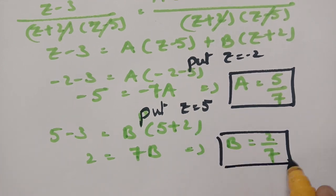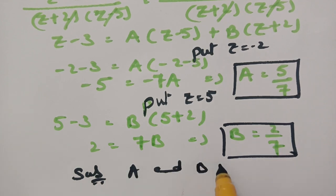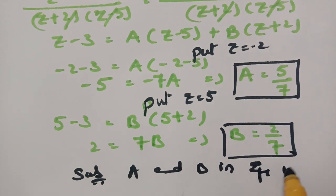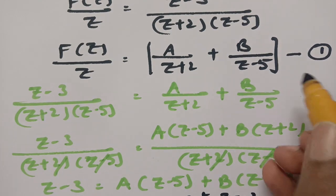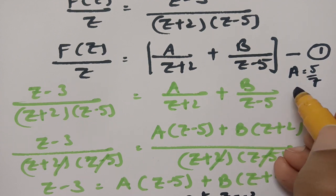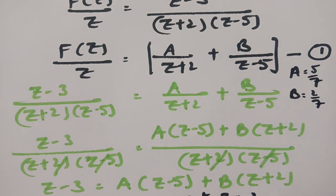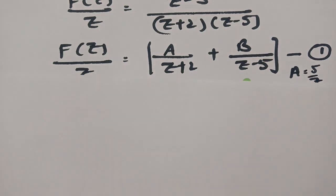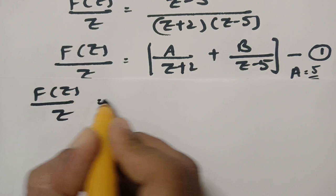Now substituting the values of A and B in equation 1, with A as 5 by 7 and B as 2 by 7, F of Z by Z is equal to 5 by 7 by Z plus 2 plus 2 by 7 by Z minus 5.